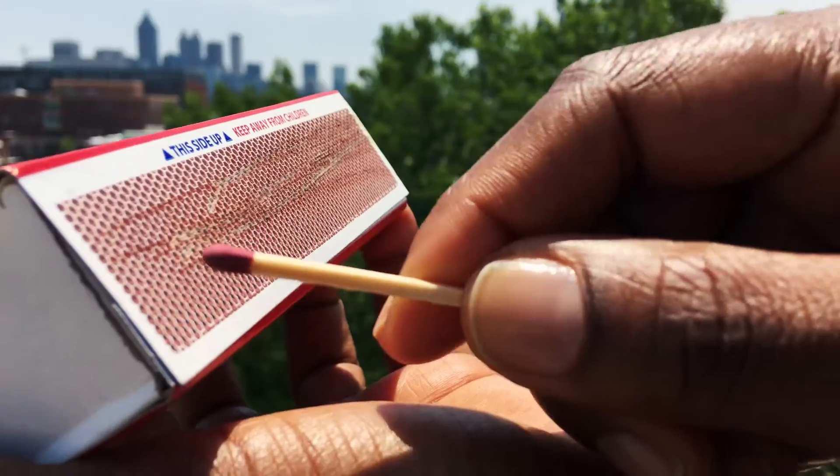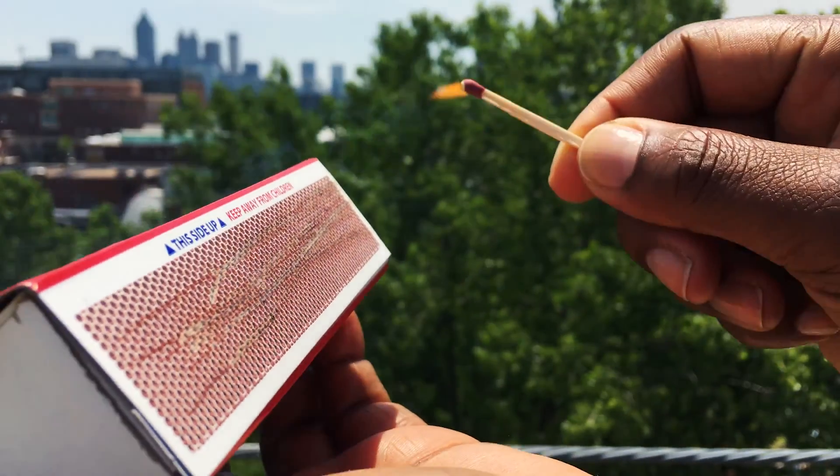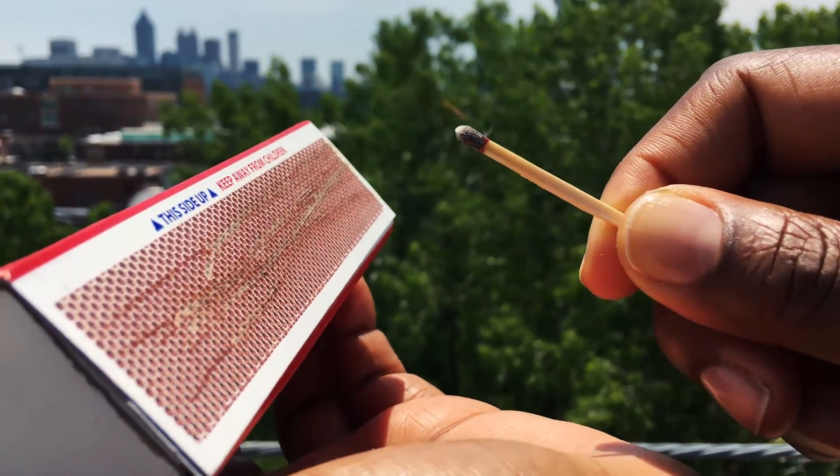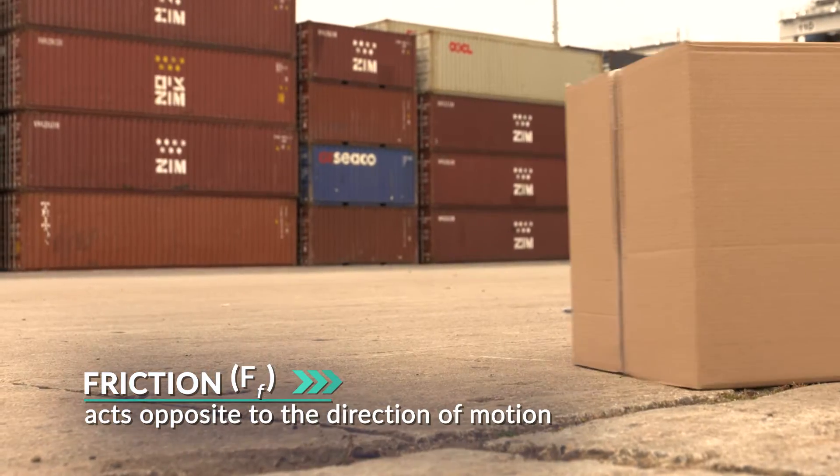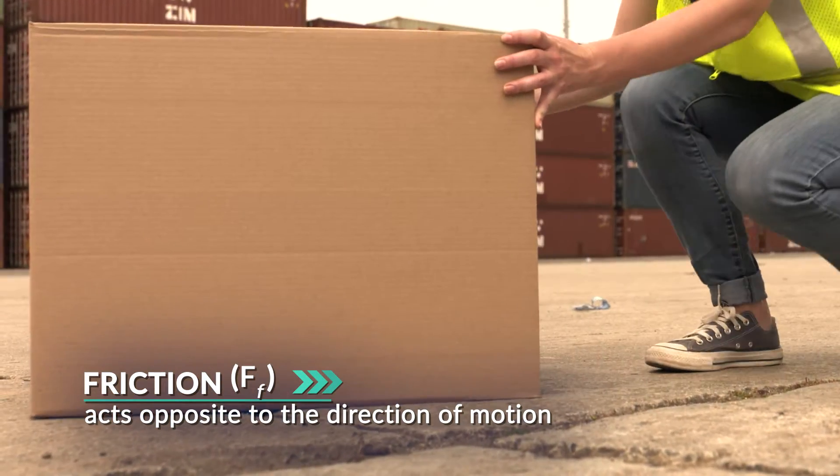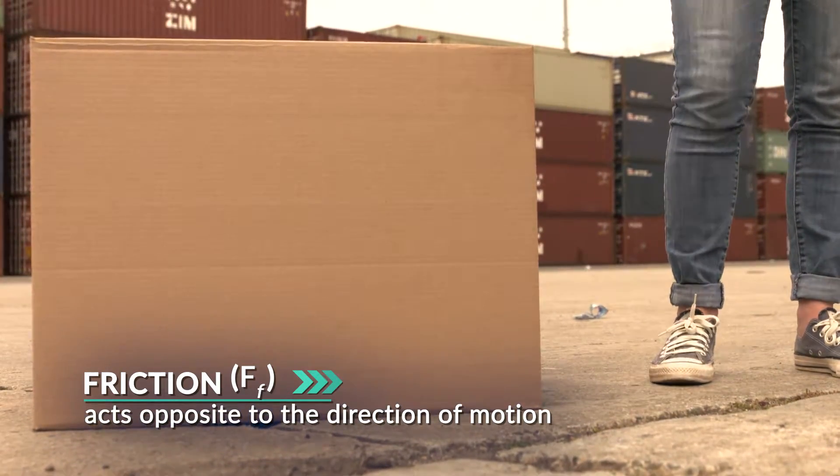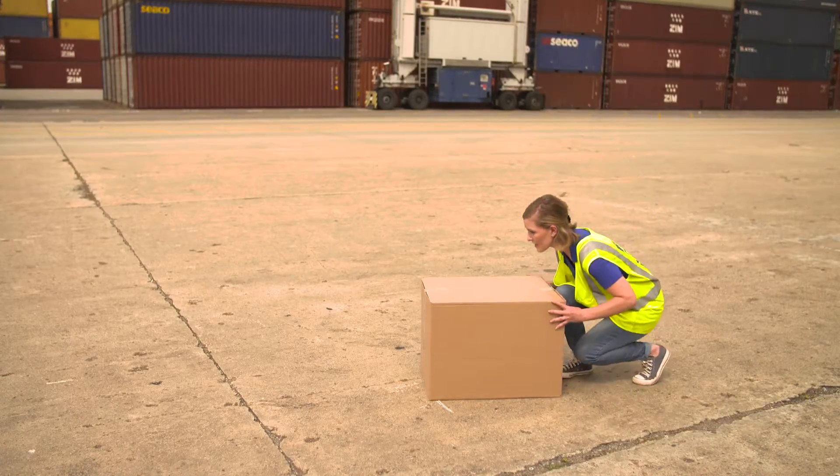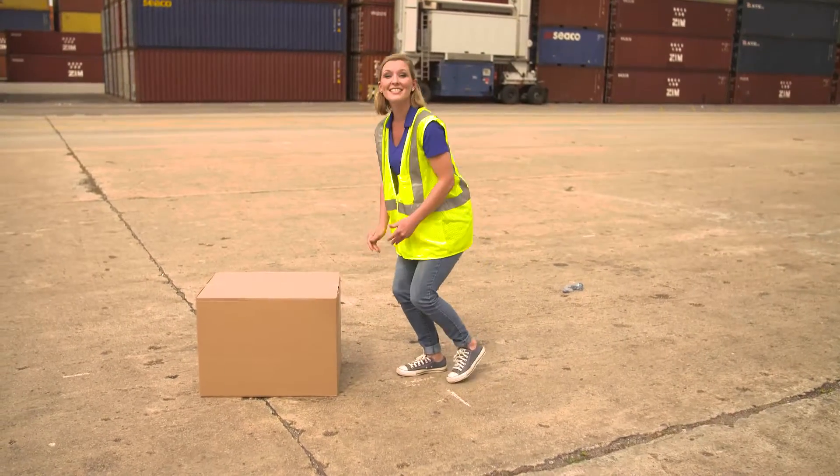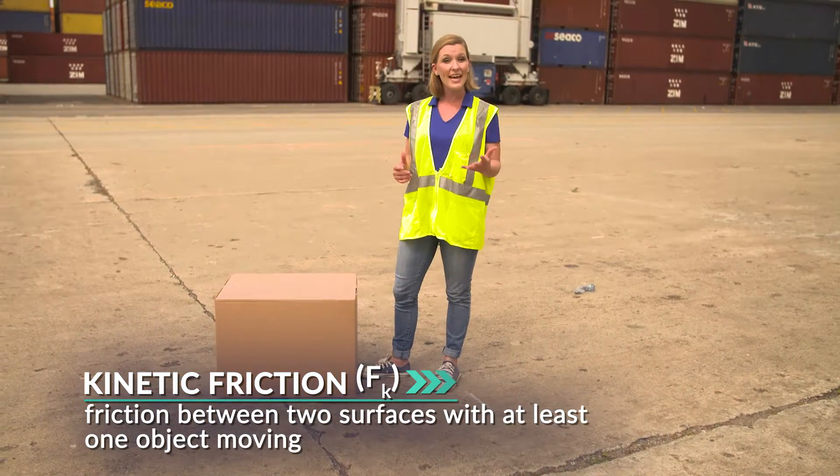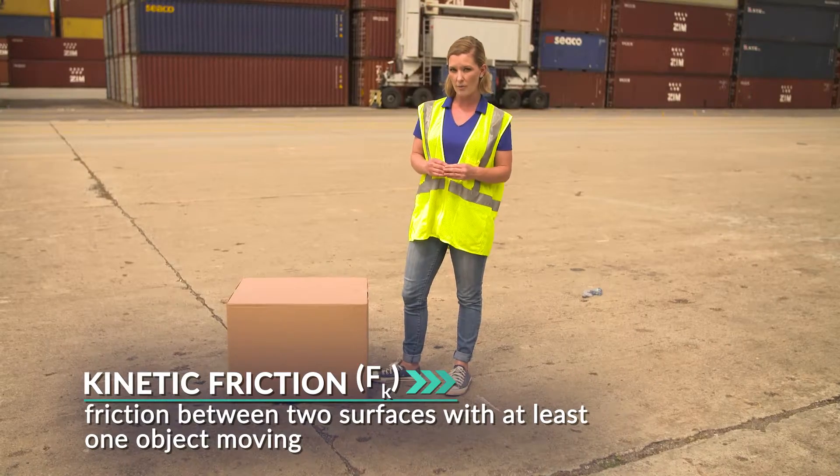Here's a hint. What's this force? The force is friction. When two objects come in contact with each other, friction acts opposite to the direction of motion. You write friction F sub lowercase f. In the case of the moving box, it's kinetic friction. Kinetic because at least one of the objects is moving.